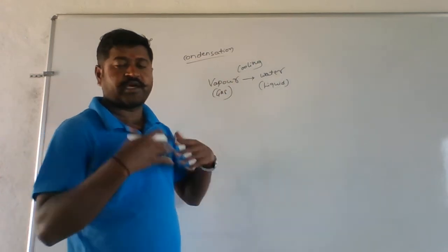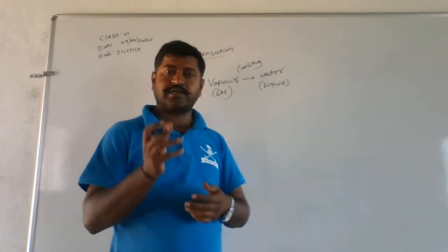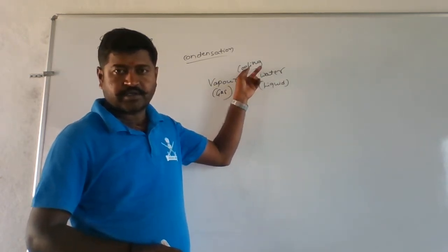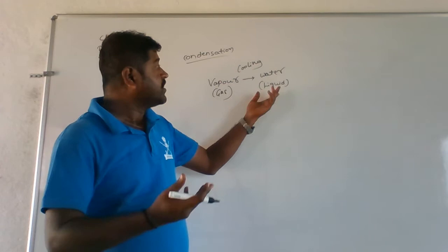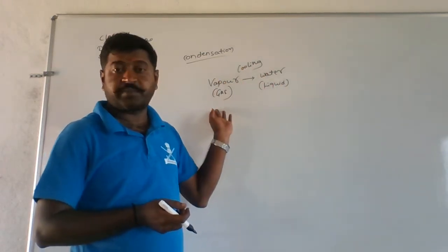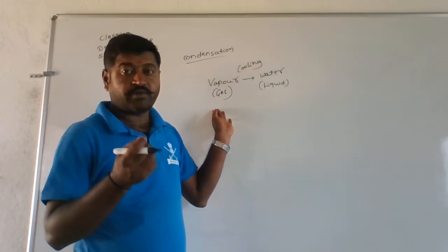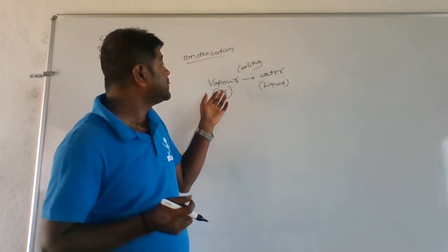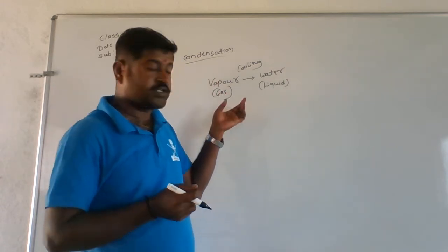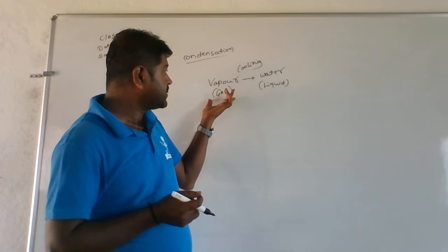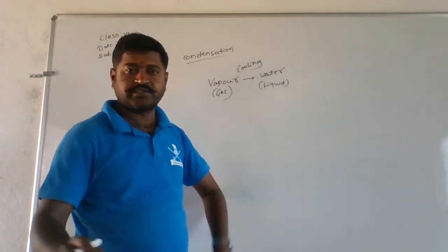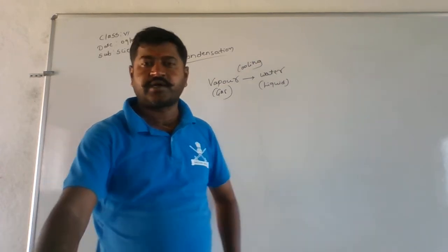Here the gaseous state is converted into its liquid state upon cooling. So if we heat a liquid substance, it is going to change into its vapour state - that is on boiling. What we are doing here is we are cooling this vapour. Vapour is always in the gaseous state. So whatever vapour is there, it is cooled and then it is converted into its liquid. This is about condensation.